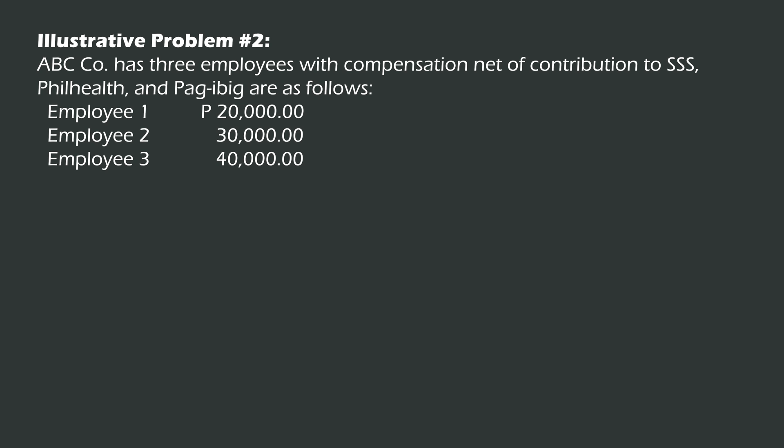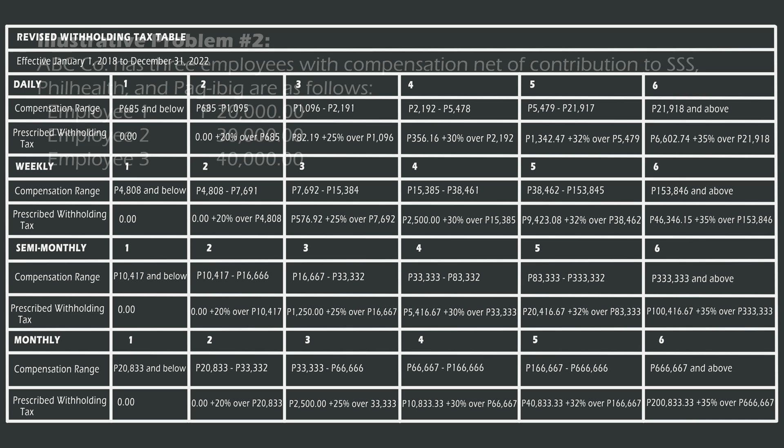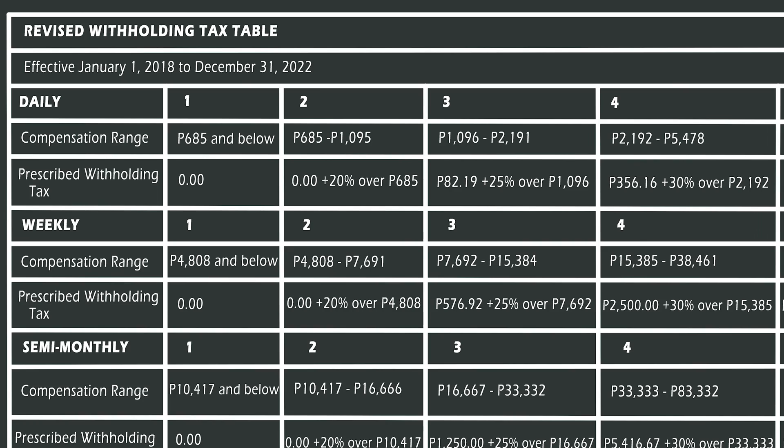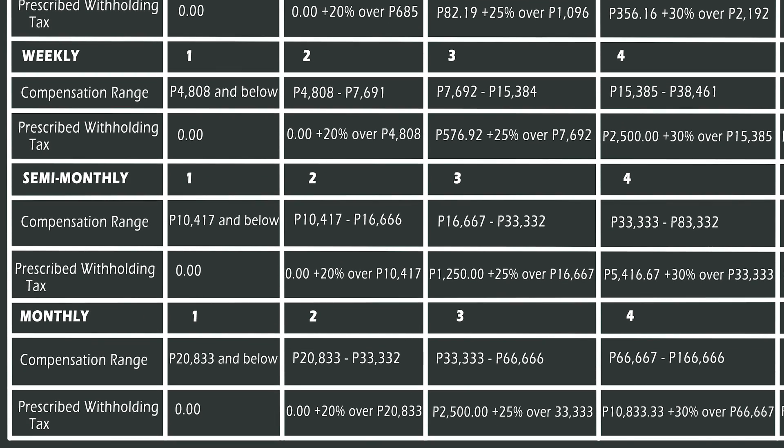Let's have three employees to demonstrate the computation of the monthly withholding tax on salaries. To compute their prescribed withholding tax, we need to refer to BIR's revised withholding tax table effective January 1, 2018 to December 31, 2022. The table shows brackets for daily, weekly, semi-monthly, and monthly. For this illustration, let's focus on the monthly bracket.